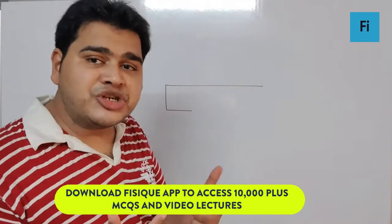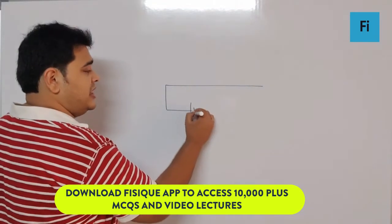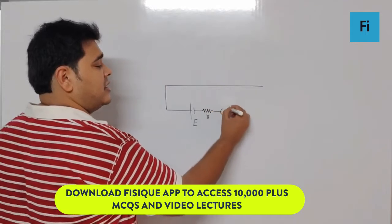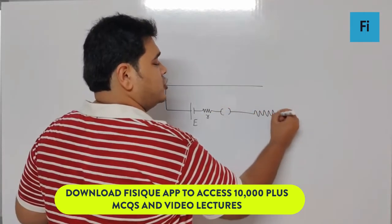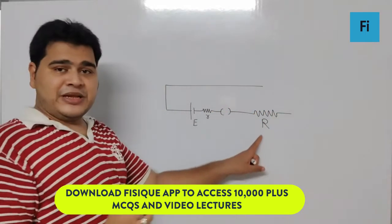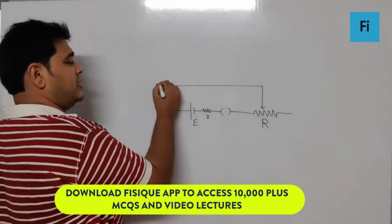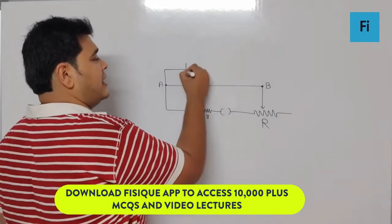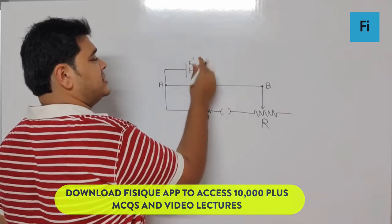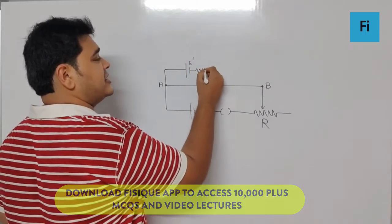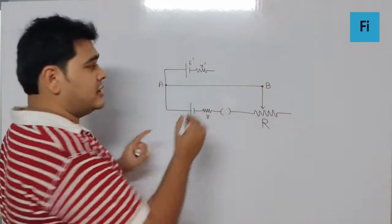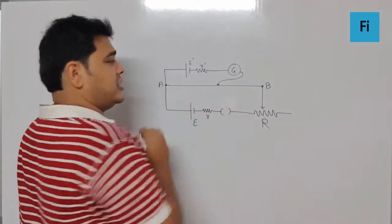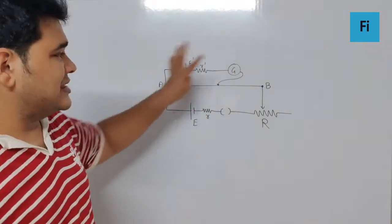This means the E over here. We have internal resistance R, a key, and a rheostat whose resistance is capital R. This is the wire AB, and we have an EMF E dash having internal resistance R dash connected to a galvanometer and then to a jockey. So let's say this is the arrangement, the initial arrangement.